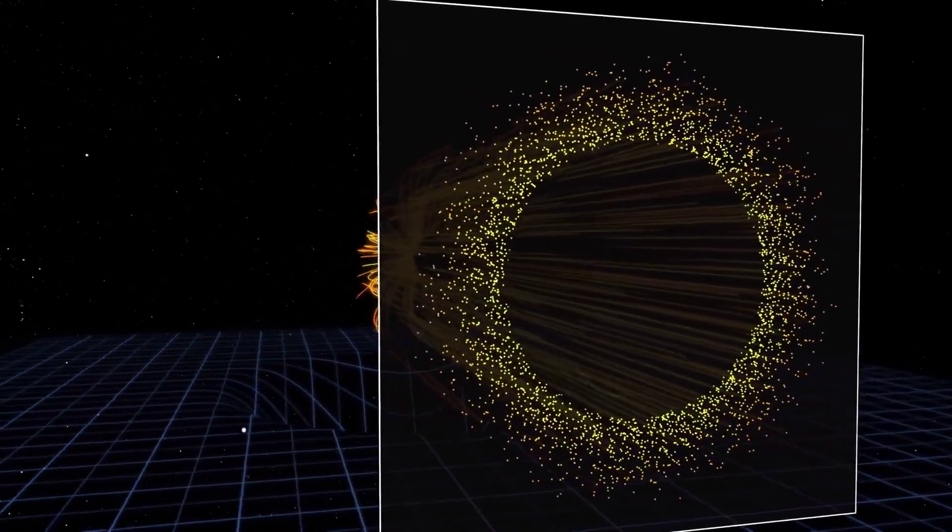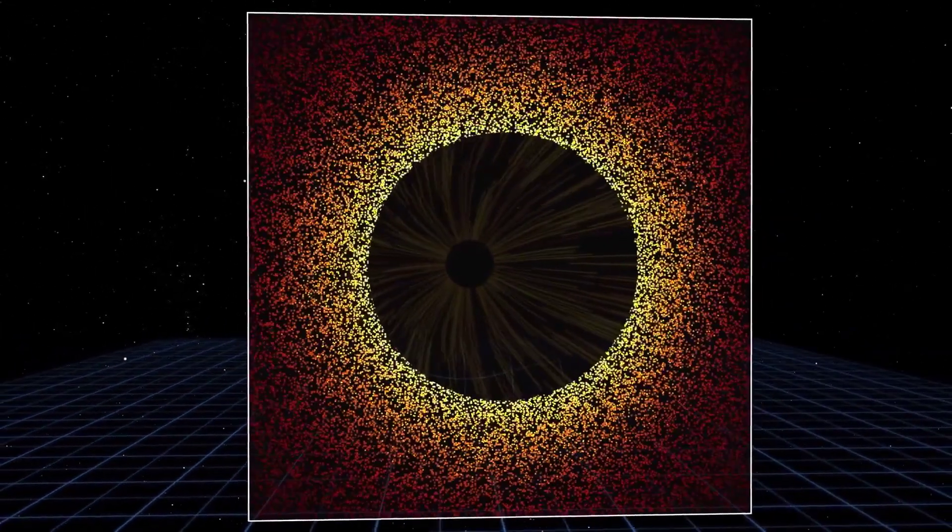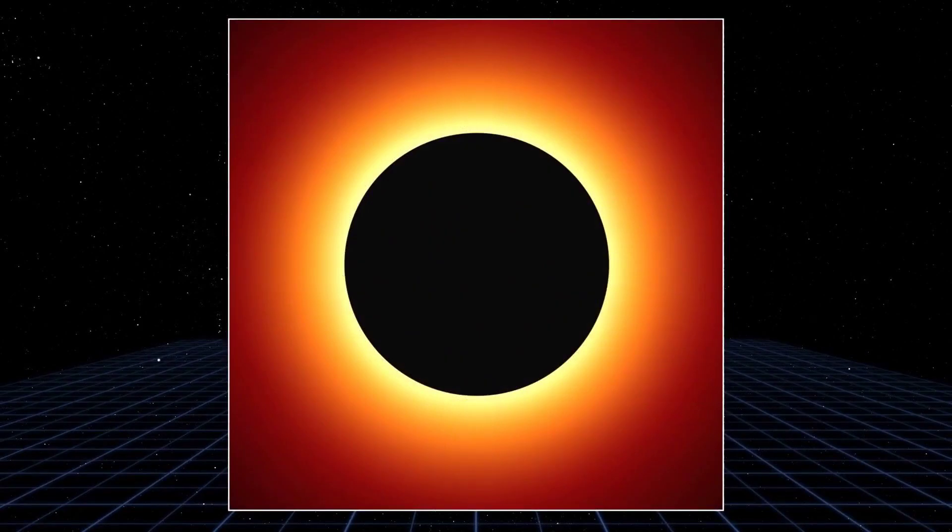This bending of light is known as gravitational lensing, and it's a phenomenon that has been observed and studied extensively by astronomers.